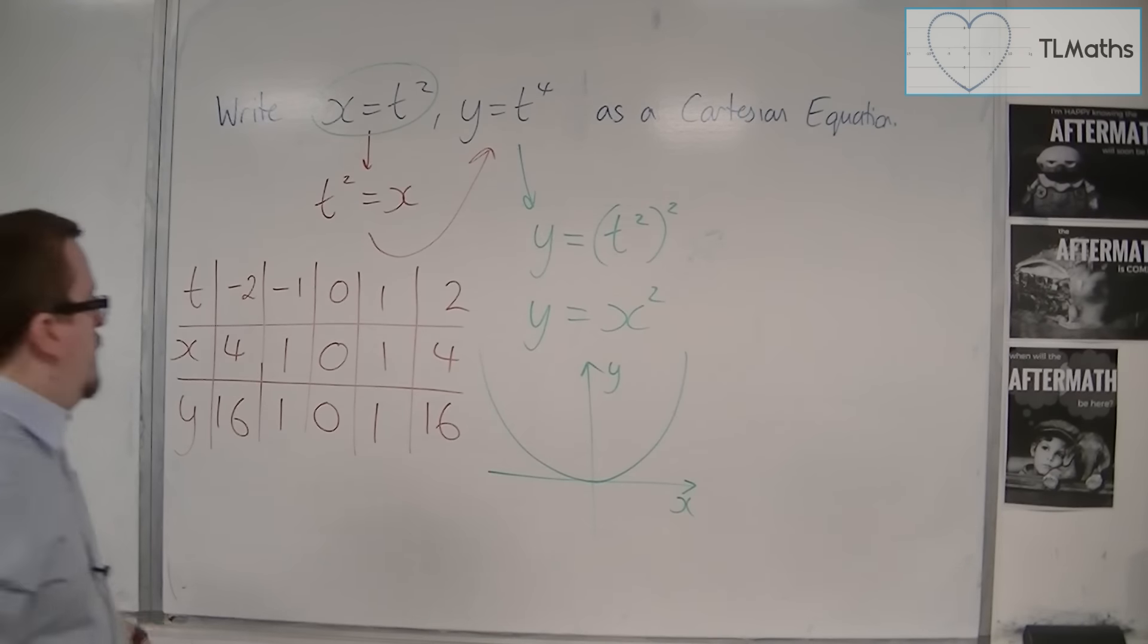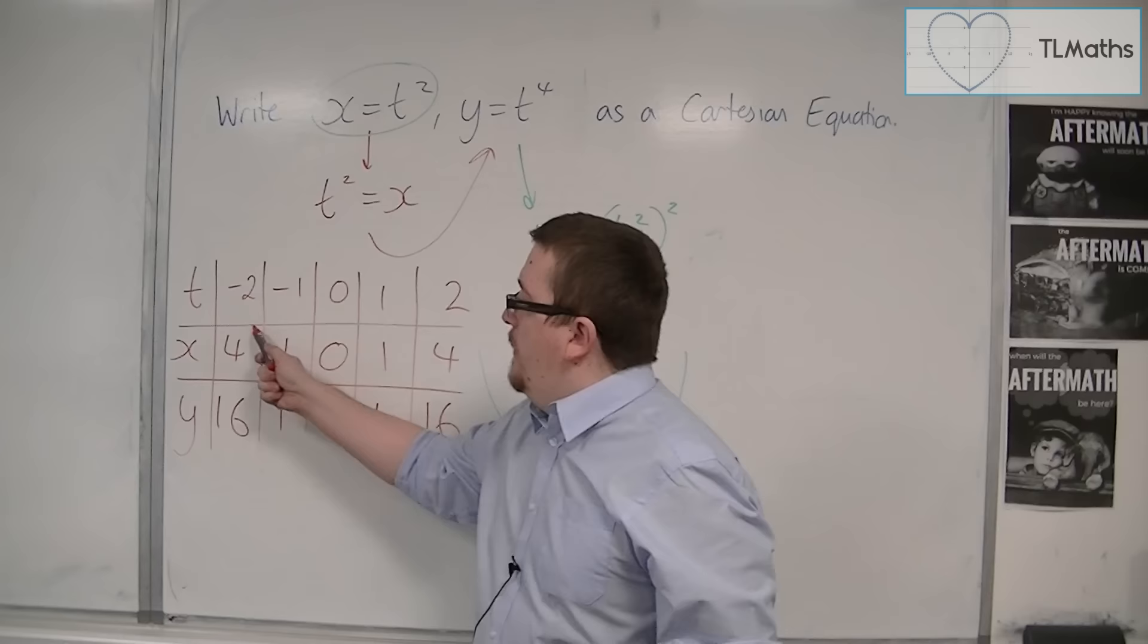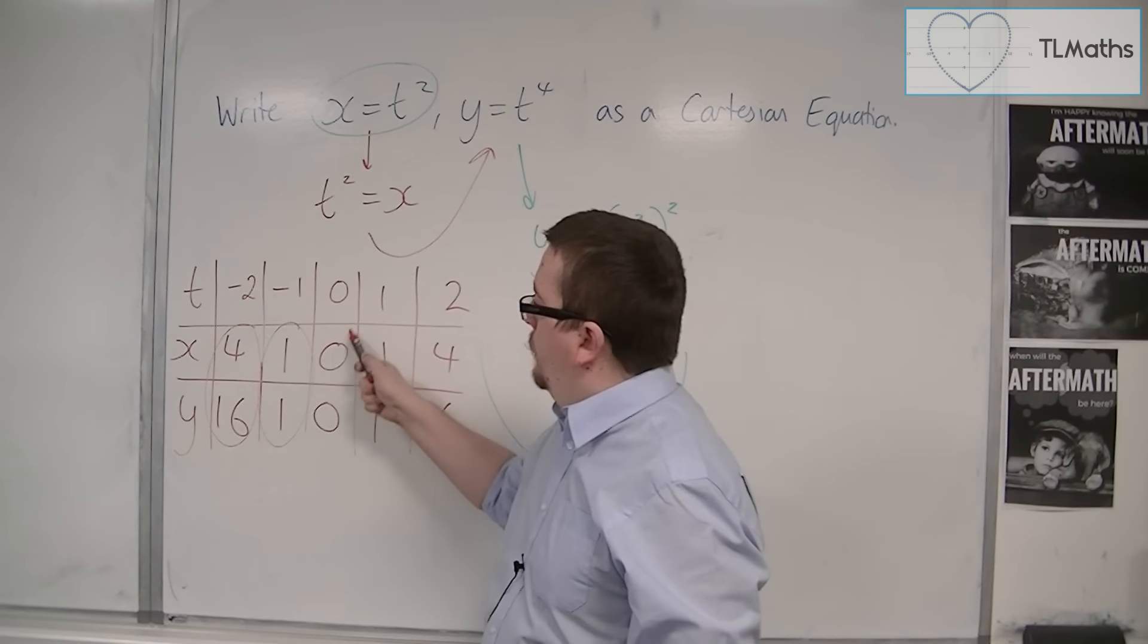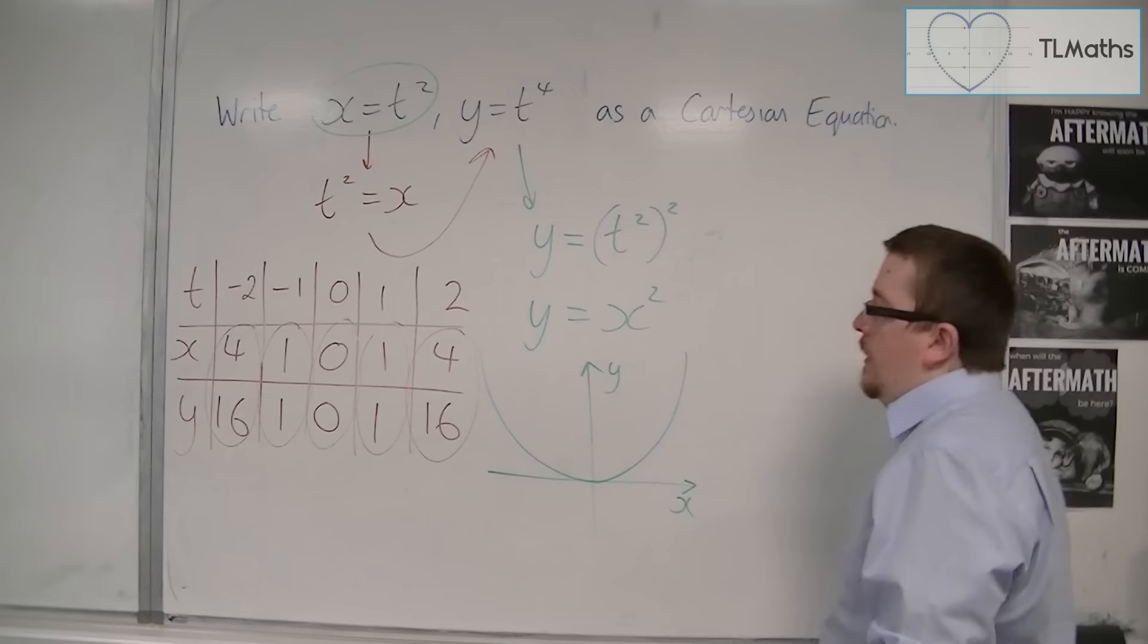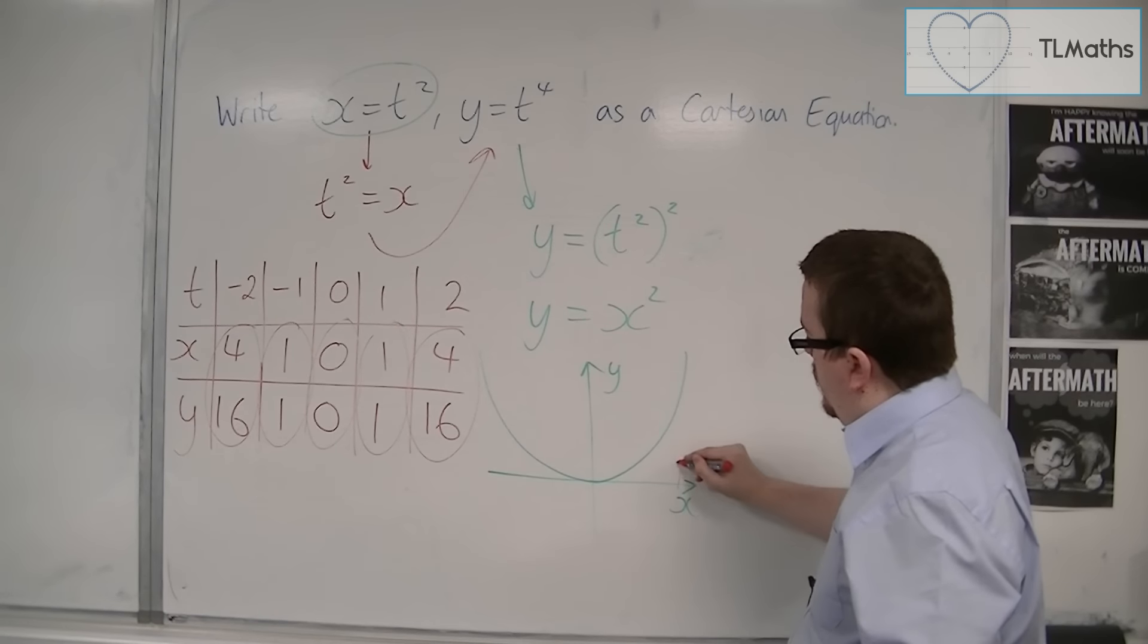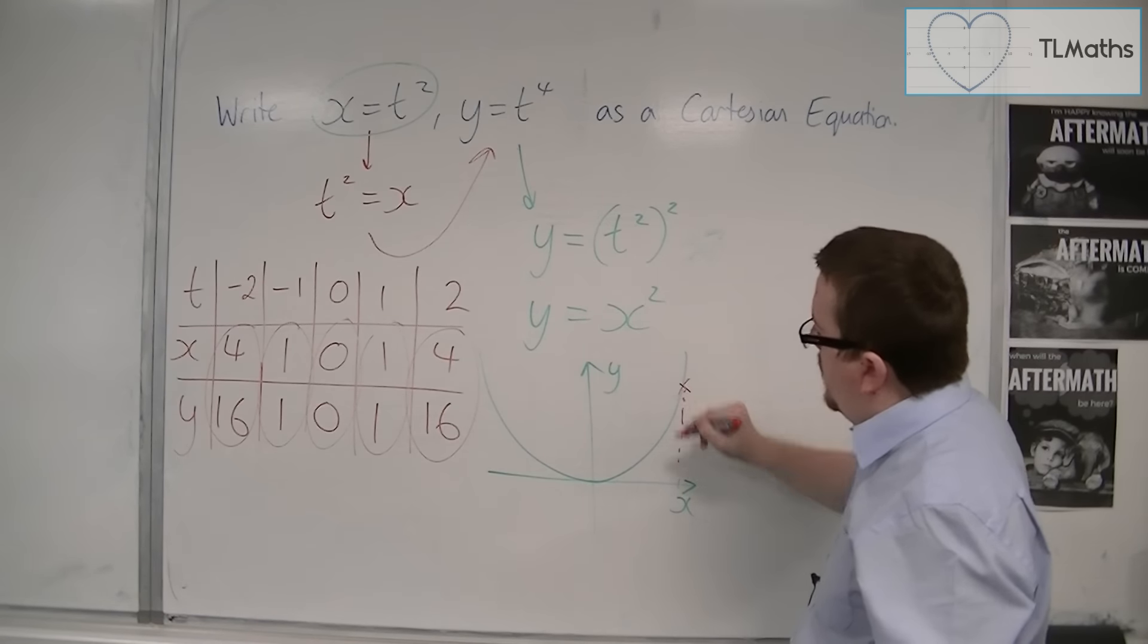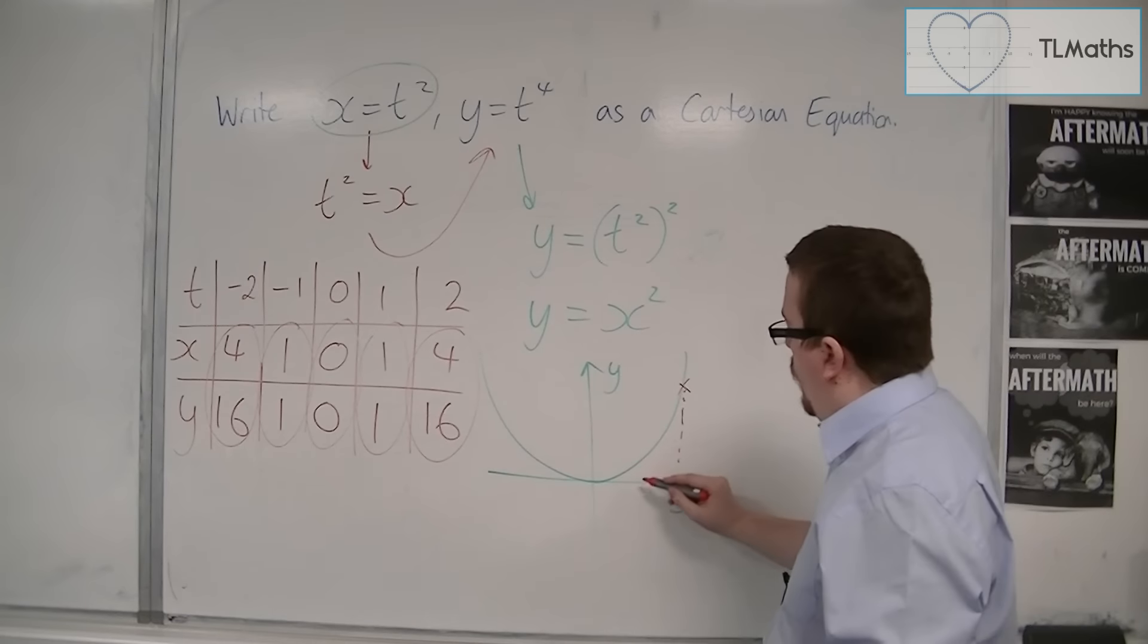So if I was then going to plot these pairs of points, much like we did in the first video on this, we would have 4, 16, which would be that point there. We'd have 1, 1. So, that would be that point there.